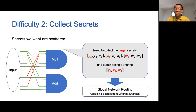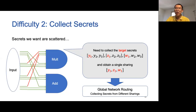The second difficulty is the need of collecting secrets from multiple sharings. During the evaluation, the secrets we need in a single sharing may be scattered in different output sharings from previous layers. For example, the sharing we want needs to contain Y1, Z1, and W1, which are scattered in three output sharings from the last layer. We need to design an efficient protocol to collect secrets from different sharings.